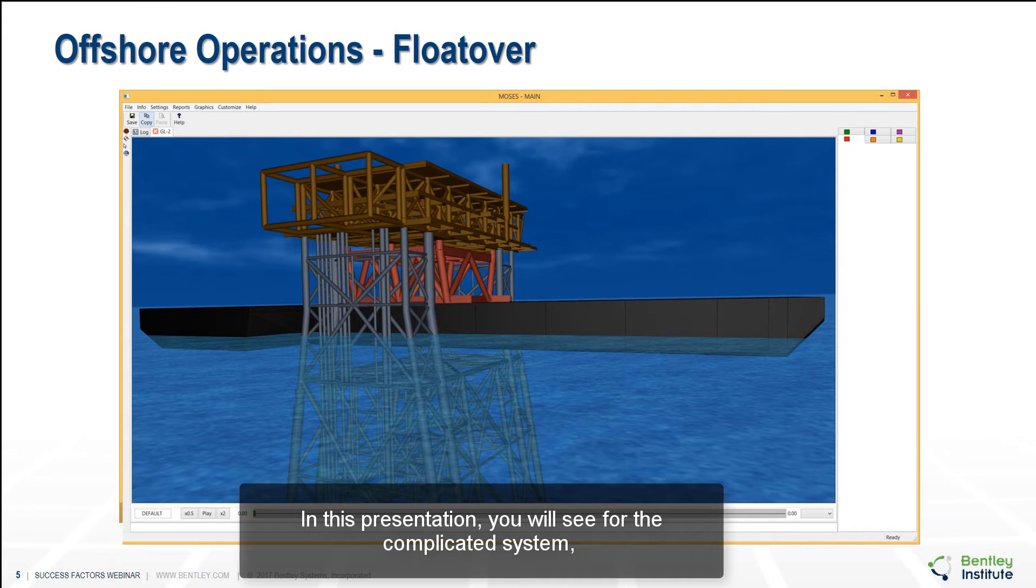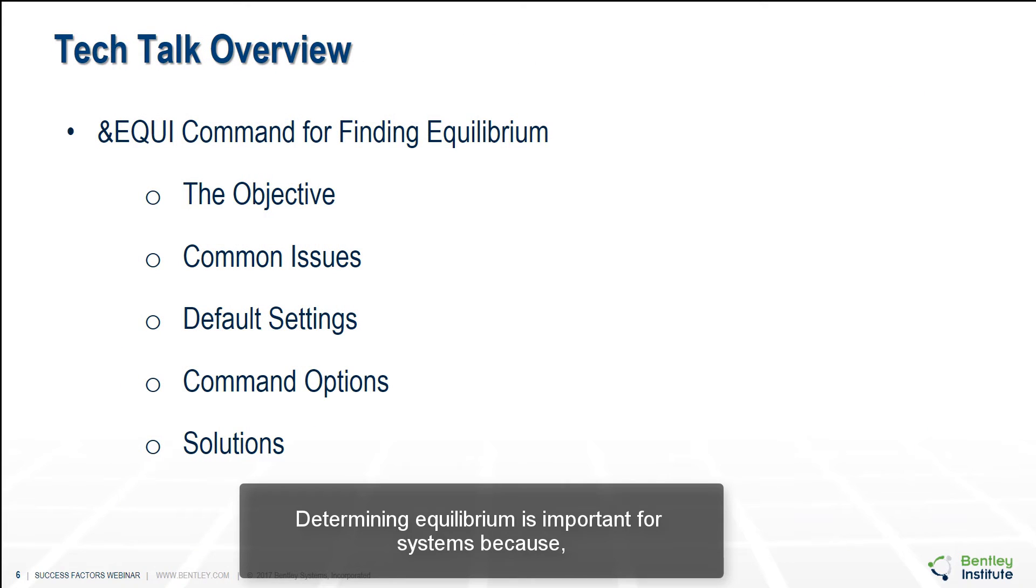In this presentation, you will see for the complicated system where the position is far away from equilibrium condition and in any case it requires long computation times but the numerical calculation have been consistently carried out for the different geometries and conditions. Therefore, the analysis of all the operations shown so far will benefit from an understanding of a static equilibrium position. Determining equilibrium is important for system because the equilibrium position and the orientation will affect the performance of the system.